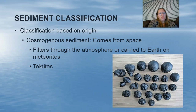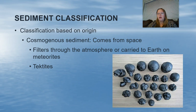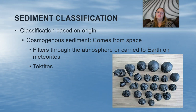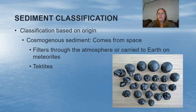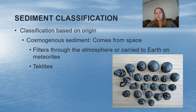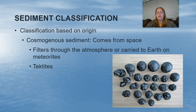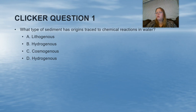The last type of sediment classification based on origin is cosmogenous sediment. This one is really cool because we don't usually think about sediment coming from space — 'cosmos' meaning space, as in cosmology, the study of space. These sediments filter through the atmosphere or are carried to Earth on meteorites. The most common type is a tektite, shown in this picture, formed from meteorite impacts on Earth. They are very rare, so seeing this many tektites in one photo is quite unusual.